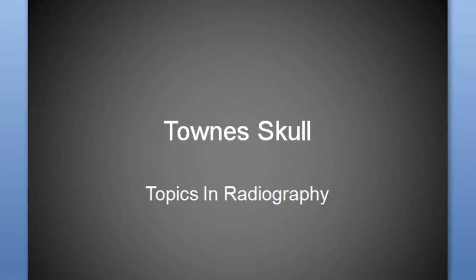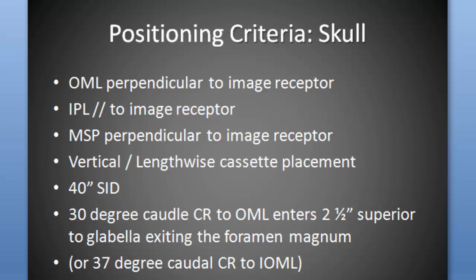So let's look at the criteria. We need the OML perpendicular to the image receptor, the interpupillary line parallel, and the mid-sagittal plane perpendicular. You're probably going to want a 10 by 12 lengthwise cassette with this extreme tube angle — it can elongate the skull quite a bit. 40-inch SID. For the skull, you need a 30-degree caudal angle on the central ray entering two and a half inches above the glabella. You need a bit more angle when doing a mandible, just to free the body and condyles of the mandible from the skull — you don't want those superimposed.